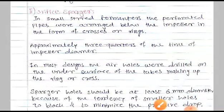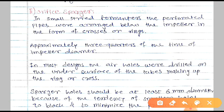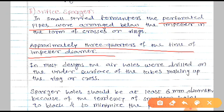The second type of sparger is the orifice sparger. These are preferred in small stirred fermenters. Orifice spargers are pipes where an arrangement of holes is made, and through these holes air is pumped into the fermentation broth. Their hole size is approximately three-quarters of the impeller diameter, so they efficiently provide air during the process of fermentation.